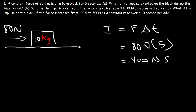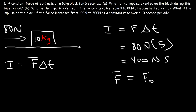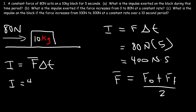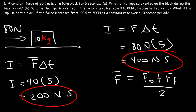Now what about Part B? What is the impulse exerted if the force increases from 0 to 80 newtons at a constant rate? If the force is not constant but changes at a constant rate, you need to use the average force — that's the average force multiplied by the change in time. The average force is the sum of the initial and final force divided by 2. Averaging 0 and 80 gives 40, so it's 40 times 5, which equals 200 newton-seconds — basically half of the first answer.